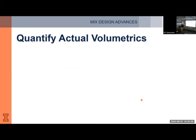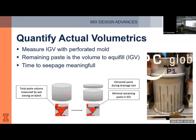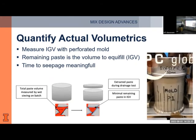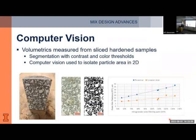How do we quantify volumetrics in the lab? We can use a perforated mold — we place aggregate with paste, compact the structure, and the paste remaining inside represents the minimal paste required to equifill the mixture, as excess paste is drained. We can also use computer vision from a sliced polished sample, using image editing software to isolate particles and calculate paste film thickness and back-calculate intergranular voids. These methods apply to both hardened and fresh samples.